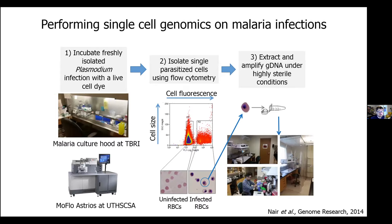In our platform, we take red blood cells from a malaria parasite infection, cryopreserve them, and ship them to our lab in Texas. We incubate these with a live cell dye and perform flow cytometry to pull out the infected cells. One really nice feature of working with malaria parasites is that they live in red blood cells that lack nuclei, so identifying infected red blood cells — simply looking for those that have nuclei — is quite trivial. We sort single cells into single tubes and, under incredibly sterile conditions, amplify up these genomes using multiple displacement amplification and perform either genome sequencing or genotyping.